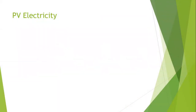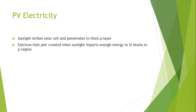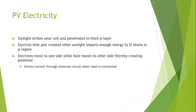Now let us discuss about photovoltaic electricity. Sunlight strikes the solar cell and the light energy penetrates to the thick p-layer — p for holes, or positive region. The electron-hole pair is created when the sunlight impacts the energy through the semiconductor atoms in the p-region. The electrons move towards one side while the holes, or positive charge carriers, move towards the other side, and DC current is produced which can be used to drive loads.